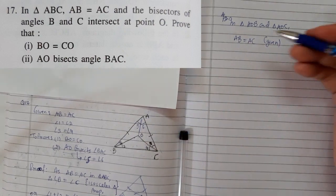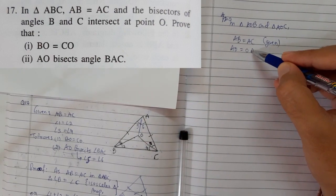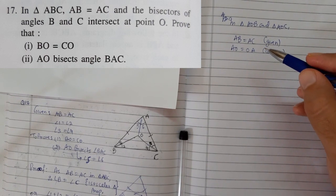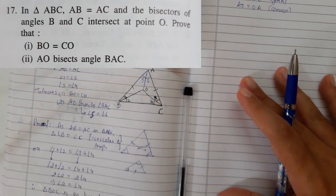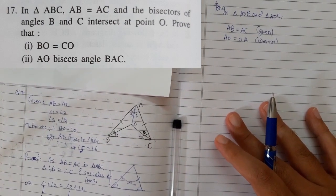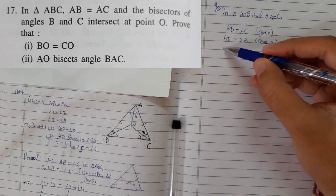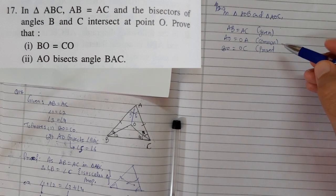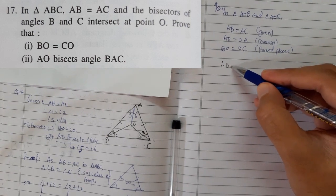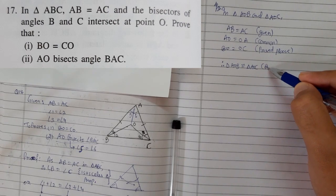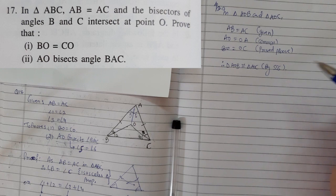Second, AO equals AO. Third thing is, which we have already proved, which is BO equals OC. As you can see in the figure, BO is equals to OC. We can write proved above. Therefore, triangle AOB is congruent to triangle AOC by SSS congruency criteria.